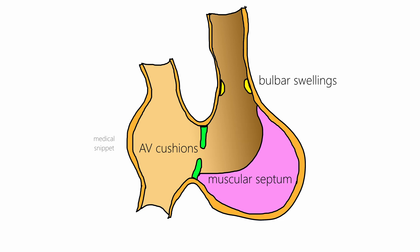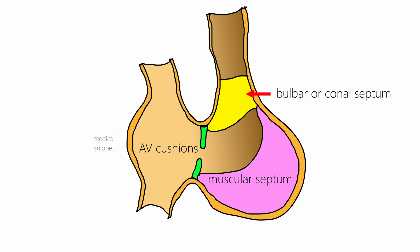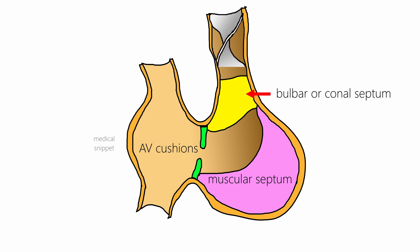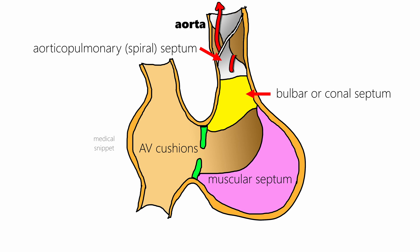Two bulbar swellings develop along the right dorsal and left ventral walls of the conus cordis. These swellings grow towards each other and fuse to form the bulbar or conal septum, which divides the conus cordis into an anterolateral portion and a posteromedial portion. The anterolateral portion forms the right ventricular outflow tract and the posteromedial portion forms the left ventricular outflow tract. The distal part of the bulbar septum fuses with the aorticopulmonary septum, which divides the truncus arteriosus into the aorta and pulmonary artery.